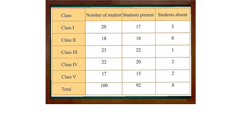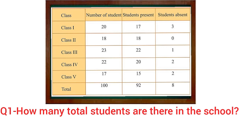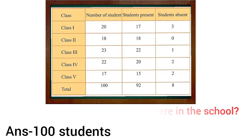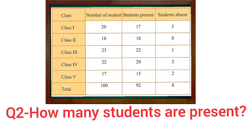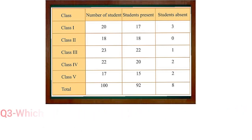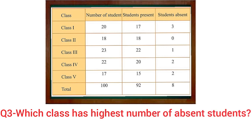Now let's learn to solve questions by looking at the table. The first question is: how many total students are there in the school? Looking at the table — yes, there are 100 students. The next question is: how many students are present? According to the table, 92 students are present. The next question is: which class has the highest number of absent students? Looking at the table — yes, that's right — class 1st.